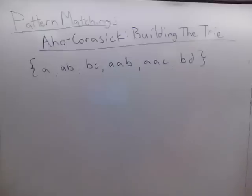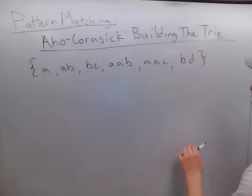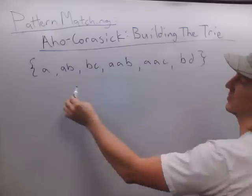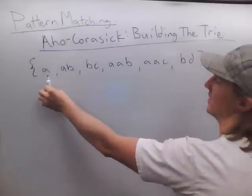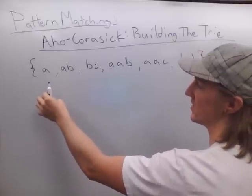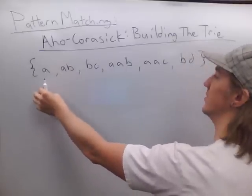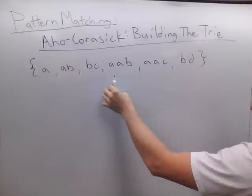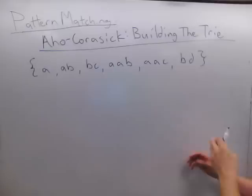For the Aho-Corasick algorithm, you have to build a tree, and for that tree it's going to represent prefixes for the dictionary, which includes AAB, BC, AAB, etc.